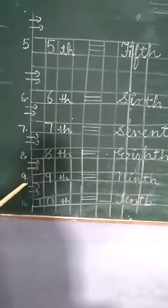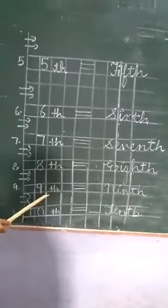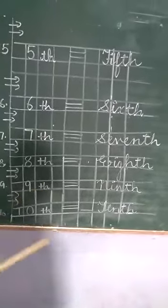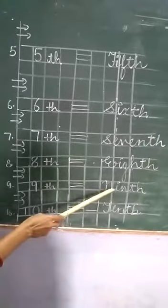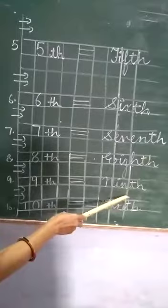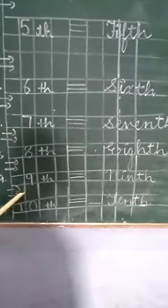And then we write 9. The ordinal number of 9 is ninth. In order or rank, we say ninth. The spelling of ninth is N-I-N-T-H. E is not there, N-I-N-T-H. Again you leave two lines.